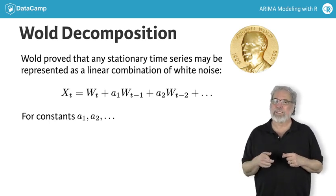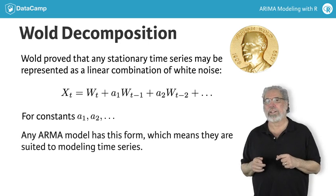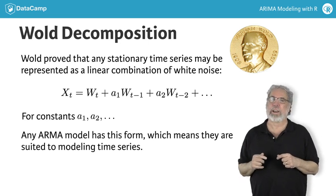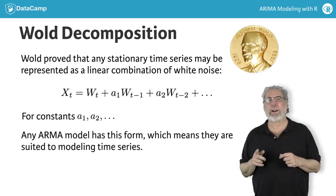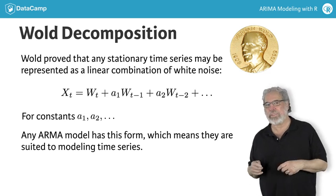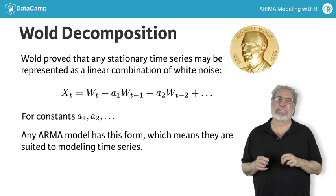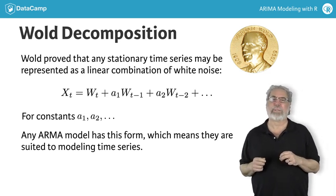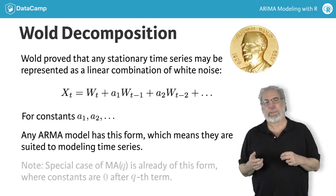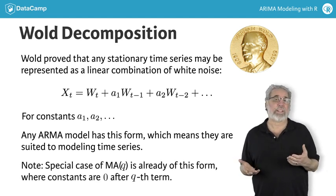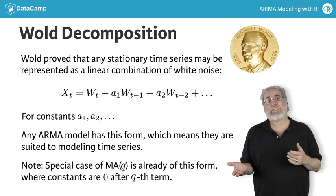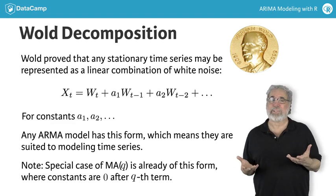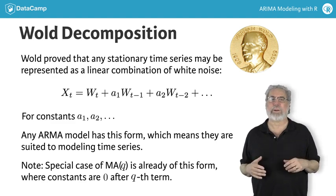We can also show that any ARMA model is a linear combination of white noise. This means that ARMA models are well-suited for describing the dynamics of stationary time series. The moving average model is already in this form, and as it turns out, all ARMA models are of this form.